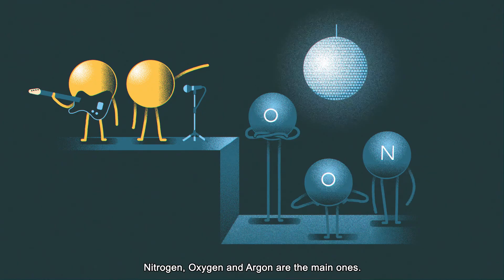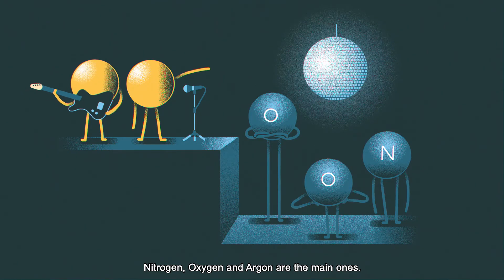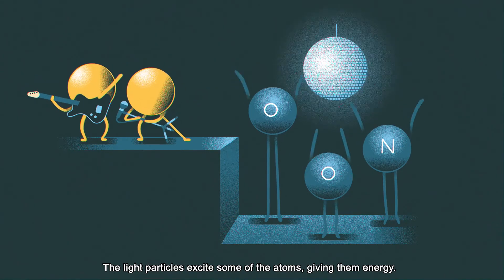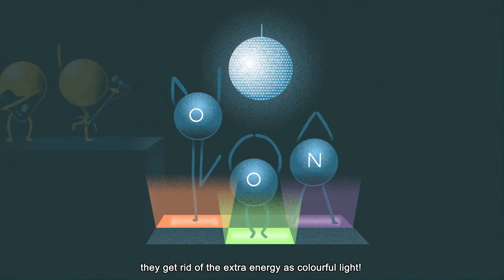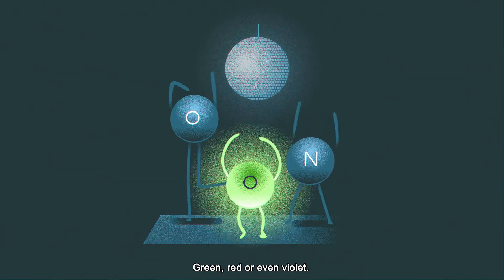Nitrogen, oxygen and argon are the main ones. The light particles excite some of the atoms, giving them energy. Atoms don't like to be excited. They get rid of the extra energy as colourful light. Green, red or even violet.